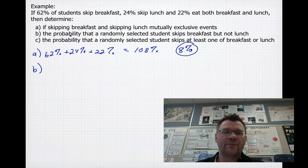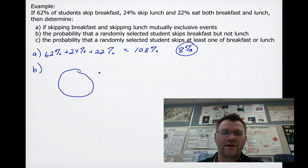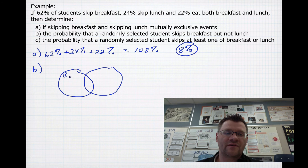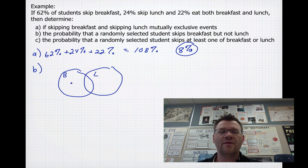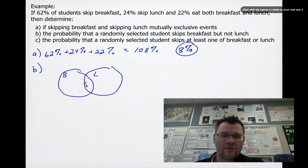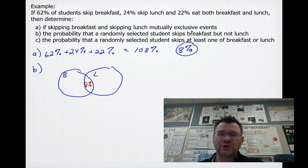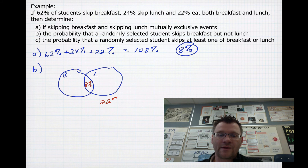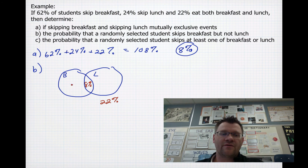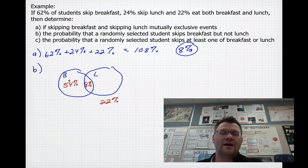Part B asks for the probability that a randomly selected student skips breakfast but not lunch. This is where our Venn diagrams come in handy. If we have students skipping breakfast and students skipping lunch, then 8% of them skip both — so that 8% goes in the overlapping area. We have 22% that eat both breakfast and lunch, so they're not skipping either, and they go on the outside. 62% skip breakfast, but 8% of those skip both, so the remainder — 54% — skip only breakfast. That answers part B.